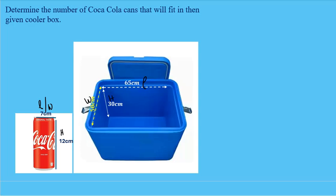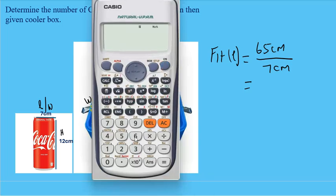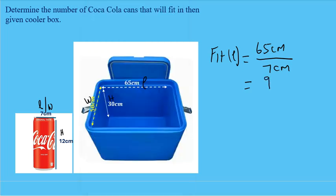We want to know how many Coca-Cola cans fit in the cooler box. First, check how many cans fit in length: take the length of the cooler box, 65 centimeters, and divide by the length of the can, 7 centimeters. 65 divided by 7 is 9.2857. We round down to nine cans — if we round up, that last can won't fit.